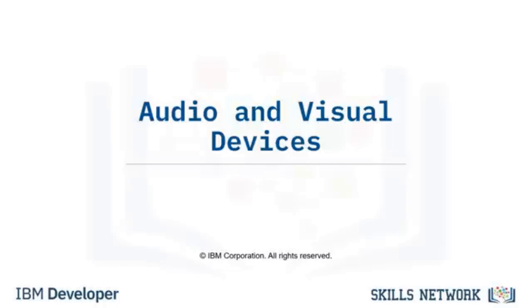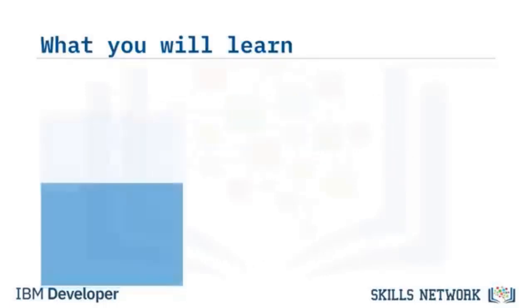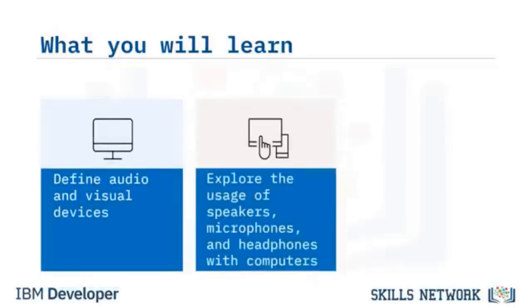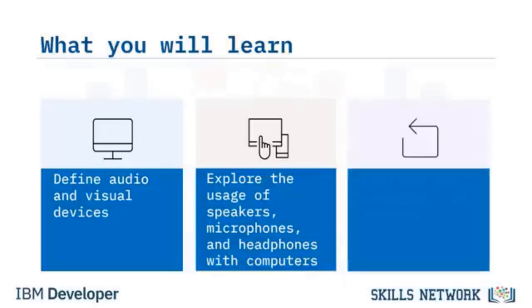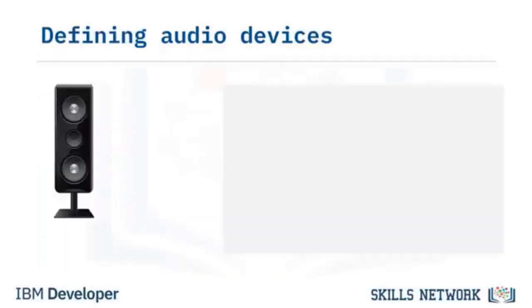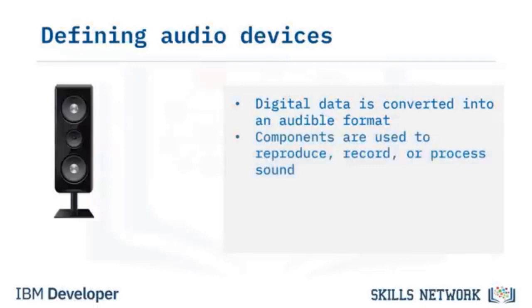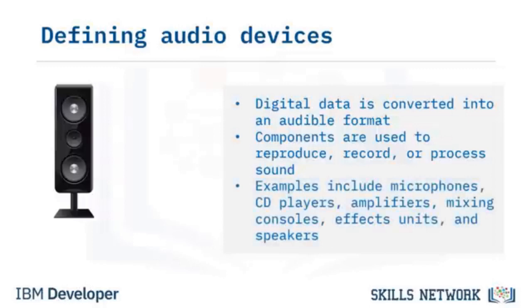Welcome to Audio and Visual Devices. Digital data from audio and video files needs to be turned into something our ears can hear, requiring specialized hardware in the form of audio devices. Audio devices refer to components that reproduce, record, or process sound, including microphones, CD players, amplifiers, mixing consoles, effects units, and speakers. Visual devices are units capable of presenting images electronically on a screen, typically with a display greater than 4 inches diagonally.